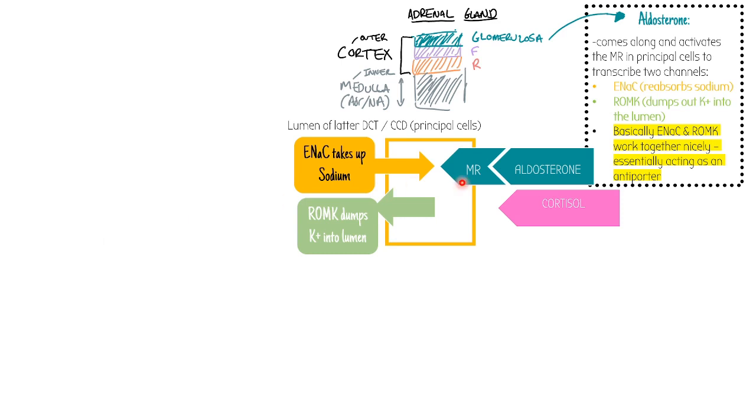So aldosterone acts on this MR receptor. However, our little problem is that cortisol also can act on the MR receptor. Therefore, even if aldosterone isn't present, even if we don't want to take up sodium, cortisol can come along and basically acts on the receptor anyway. It's more potent, so it has greater specificity and affinity to the MR receptor than aldosterone.